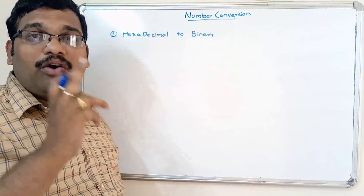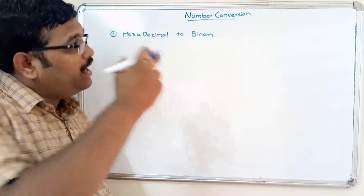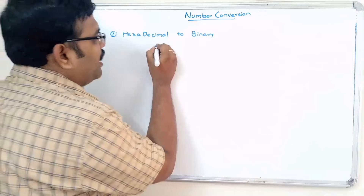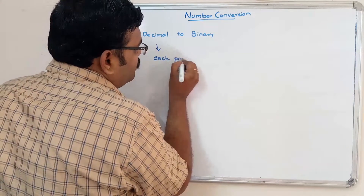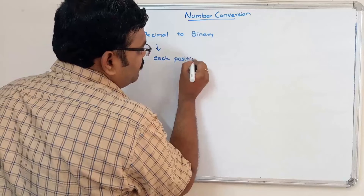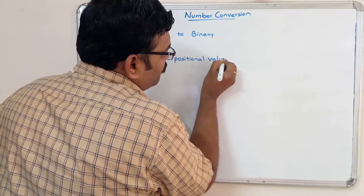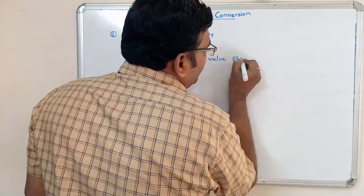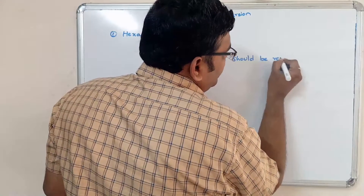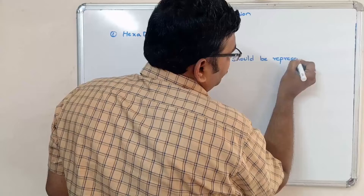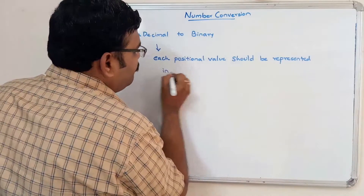In octal we represented each positional value in a 3-bit group, whereas here in hexadecimal we have to consider each and every positional value and represent it in a 4-bit group.